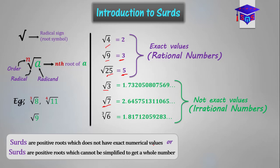Surds are positive roots which cannot be simplified to get a whole number. You can pick your calculator and punch the square root of any positive number. If it's giving you a whole number or an exact value, it's not a surd. But if it's not giving you an exact value, then it means it's a surd.